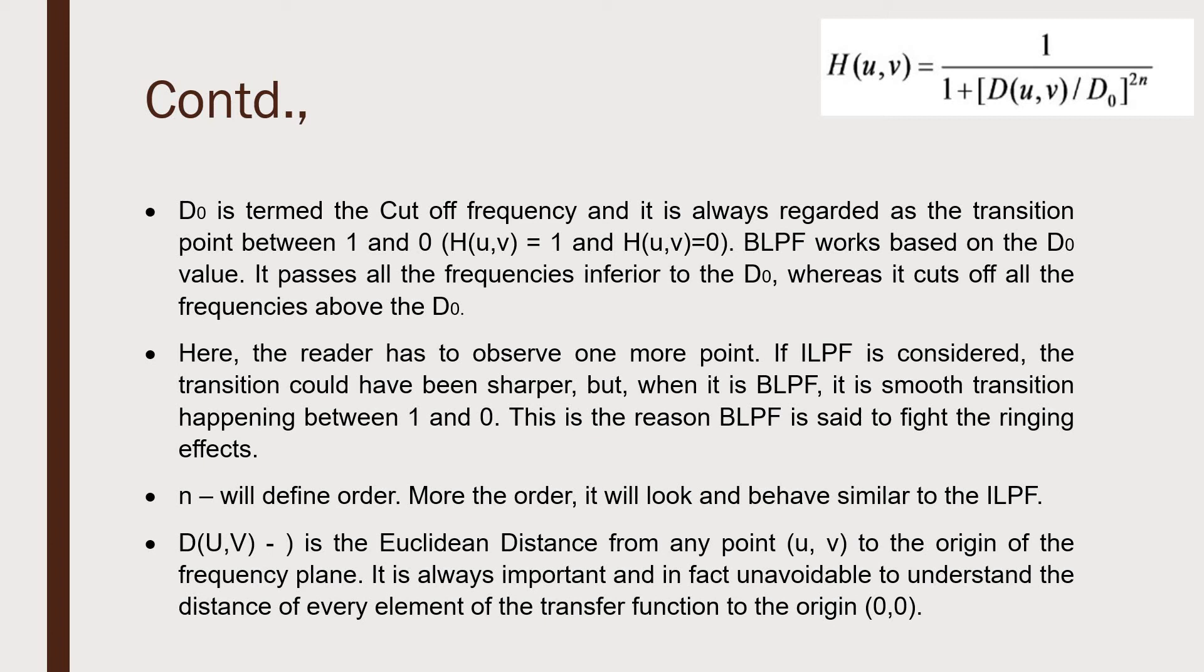If you're going with ideal low-pass filter, the transition is steeper and very sharp. But when you come to BLPF, it's very smooth, and that's explained with the values 1 and 0. The transition happens between 1 and 0, and this avoids the ringing effect. N will define the order, as we've seen in the previous slide.